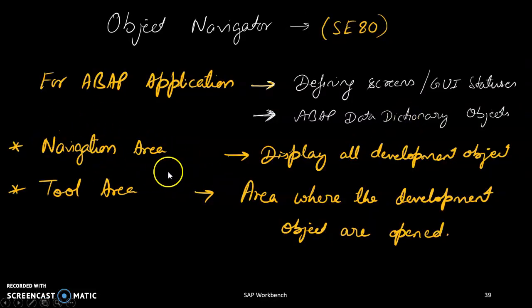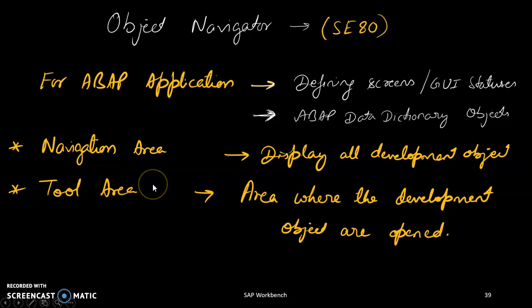The Object Navigator has a navigation area and a tool area — everything is on the left so you can see the navigation area and navigate through it. Once you have the tool area, all objects are visible. This covers all the tools that an ABAP consultant requires to complete their application development. Thank you very much.